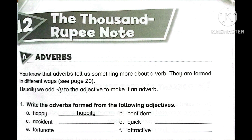Adverbs tell us something more about a verb — words that give us more details about a verb or explain it in detail are called adverbs. They can be formed in different ways. See page number 20 for examples; the link for that related unit is in the description box. Usually, we add '-ly' to the adjective to make it an adverb. For Number One, we are given: write the adverbs formed from the following adjectives.